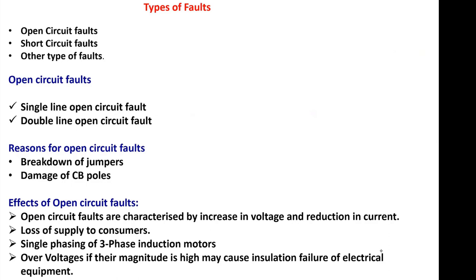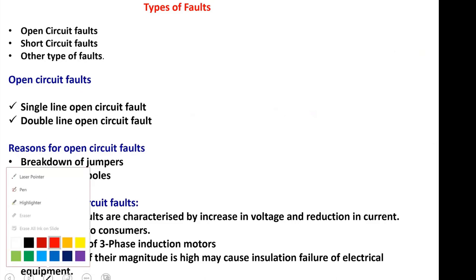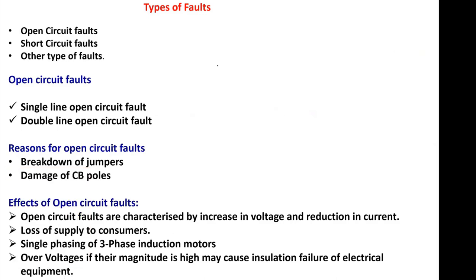What are the types of faults that we encounter usually? We encounter open circuit faults, short circuit faults, and other types of faults. Open circuit fault — we have already seen there are two types. Suppose in a three-phase conductor, if one conductor gets open circuited and the remaining two conductors are intact, then it is called single line open circuit fault.